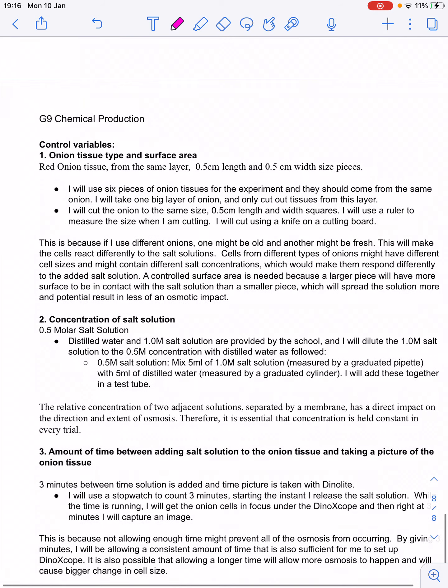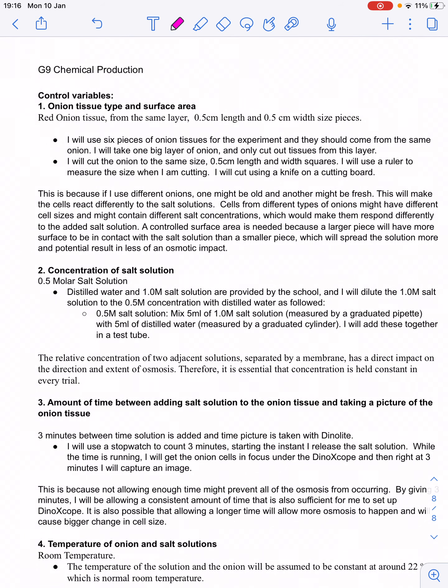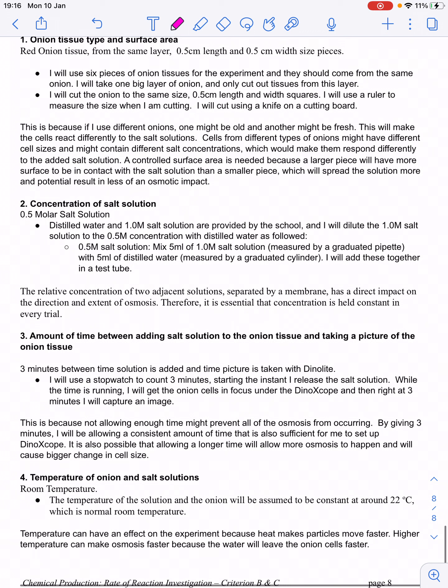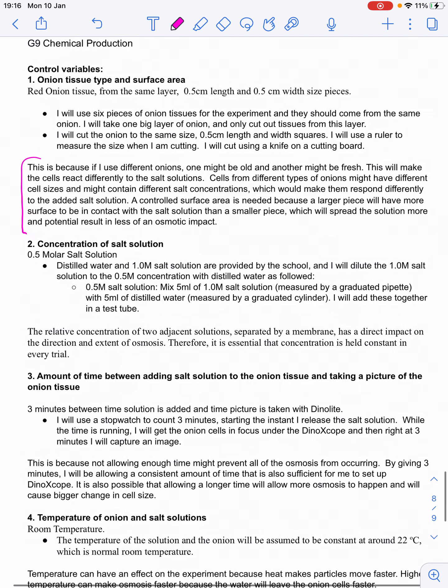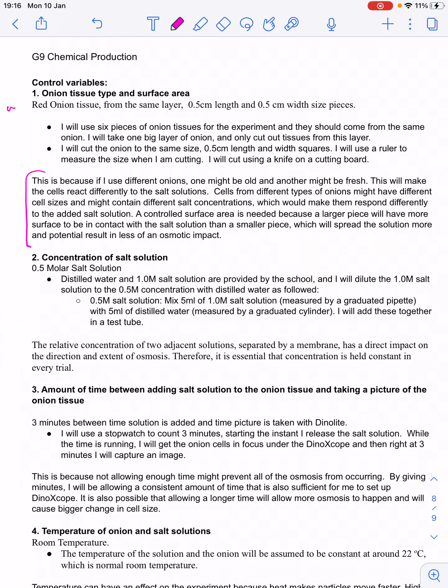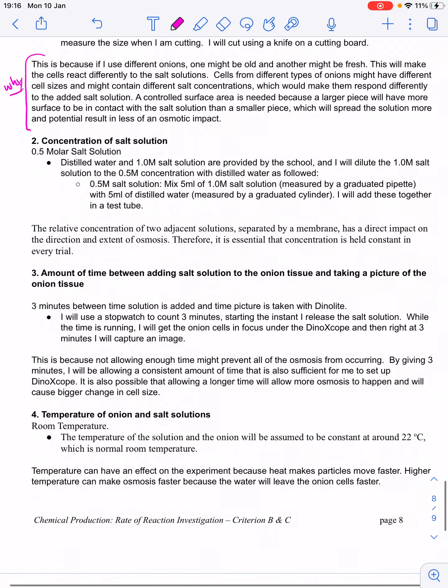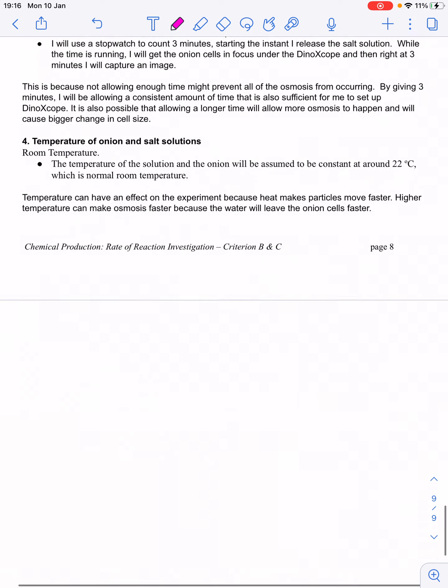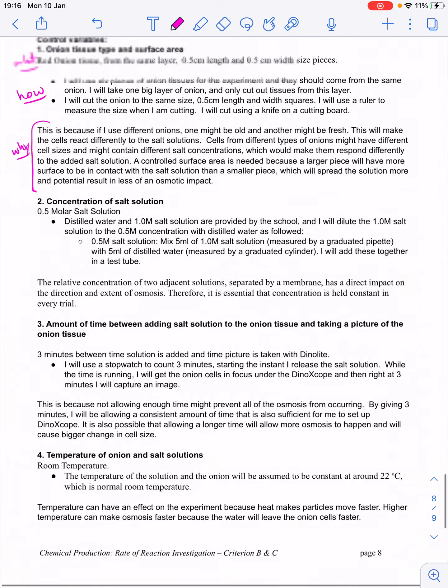And then for each control variable, they identify it again. They talk about how they're going to set up that control variable and how they're going to keep it consistent. And they also give some explanation about why it's important to keep it controlled. So this is what they're controlling. This is how they're controlling it. And this is why they are controlling it. And you'll see that they do that for each control variable. And that's the criterion B. Then it's done.